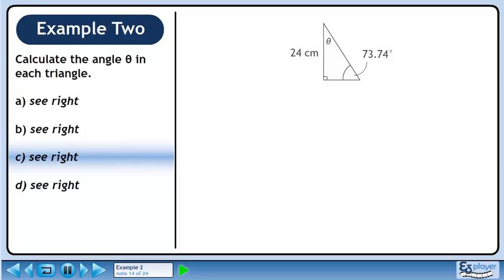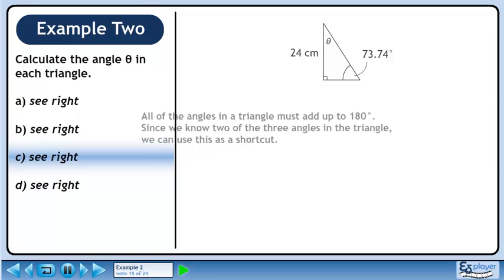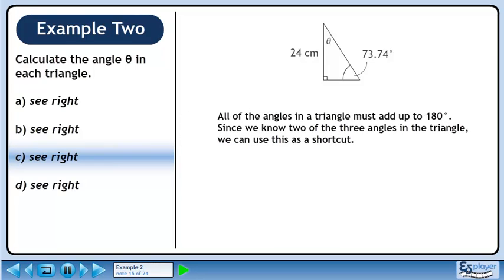Now we'll move on to part C. All of the angles in a triangle must add up to 180 degrees. Since we know two of the three angles in the triangle, we can use this as a shortcut. The unknown angle plus 90 degrees plus 73.74 degrees equals 180 degrees. Take 73.74 degrees and 90 degrees to the other side of the equation and change their signs. Perform the arithmetic to get the angle 16.26 degrees.